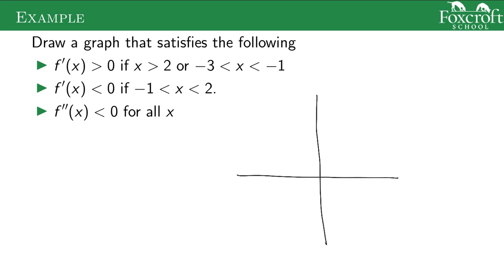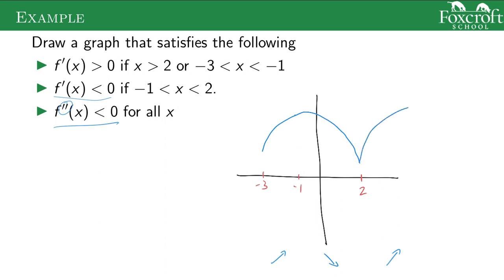For the second example, f'(x) > 0 for x greater than two and from negative three to negative one, so the function is increasing in those regions. It's decreasing because f'(x) < 0 from negative one to two. The second derivative is less than zero everywhere, so it's concave down for all x. From negative three to negative one it's increasing and concave down — the left side of the frown. Then decreasing and concave down — the right side of the frown. Then increasing and concave down again — the left side of the frown.